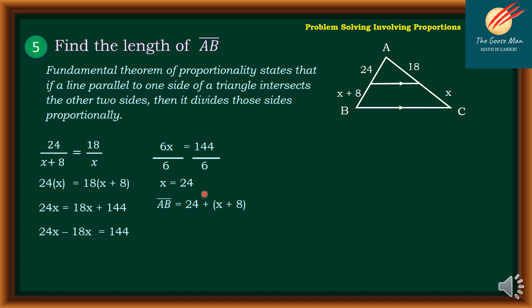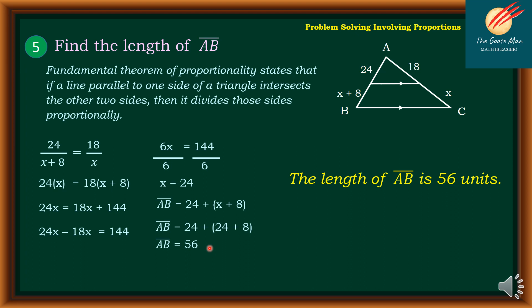But I want to find the line segment AB. Using the segment addition postulate, AB equals 24 plus x plus 8. Since x equals 24, substituting gives 24 plus 24 plus 8, which equals 56. Therefore, the length of AB is equal to 56 units.